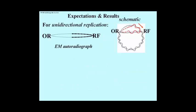This slide shows the alternative expectations. For unidirectional replication, lighter silver tracts extend from the origin of replication — the OR on the left here — until the point at which the higher concentration of tritiated thymidine was added to the cultures, after which there would be a much more dense silver tract. A schematic showing the whole chromosome is shown at the right.